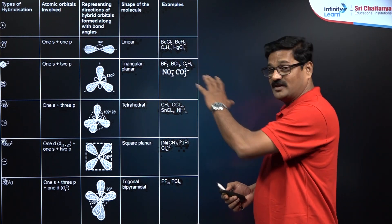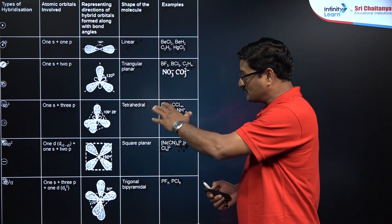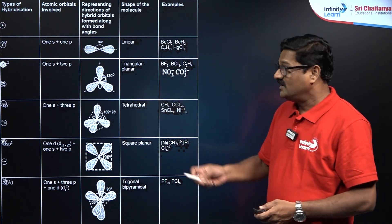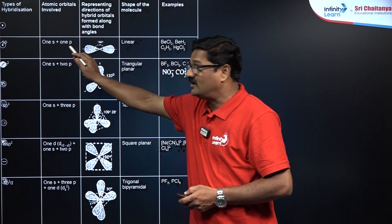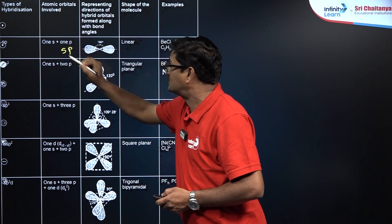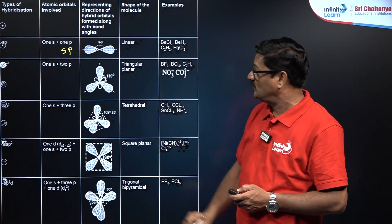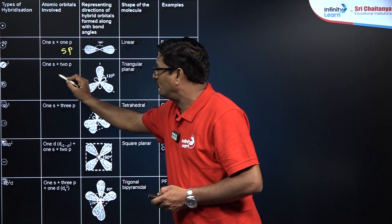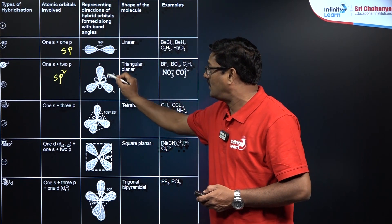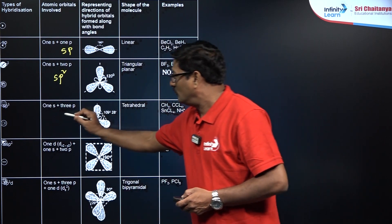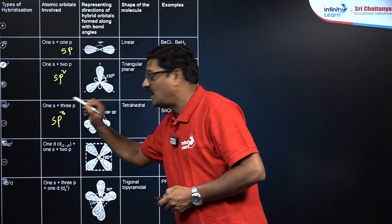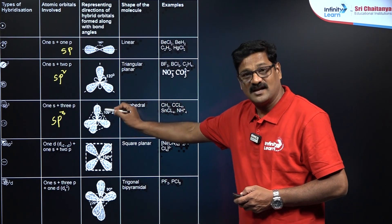The types are SP, SP2, SP3, SP3D, and SP3D2. One S orbital and one P orbital gives SP hybridization — that is a linear geometry. One S orbital and two P orbitals gives SP2 hybridization — that is trigonal planar geometry. One S orbital and three P orbitals gives SP3 hybridization — that is tetrahedral geometry.